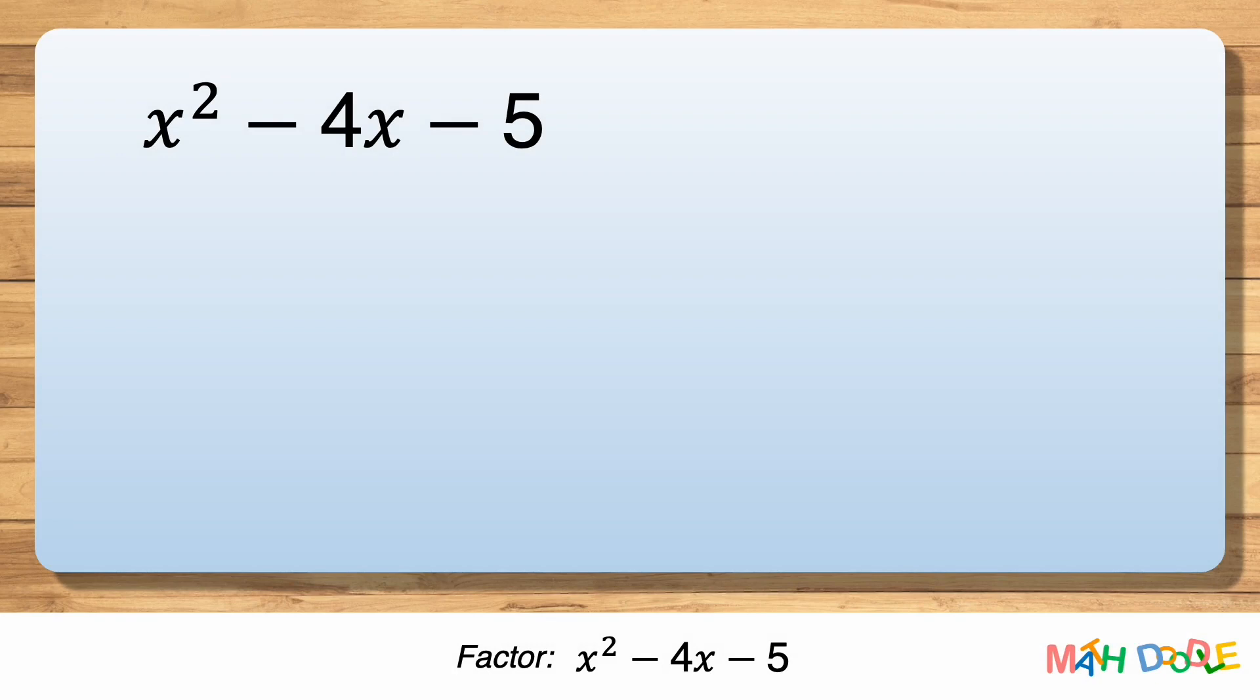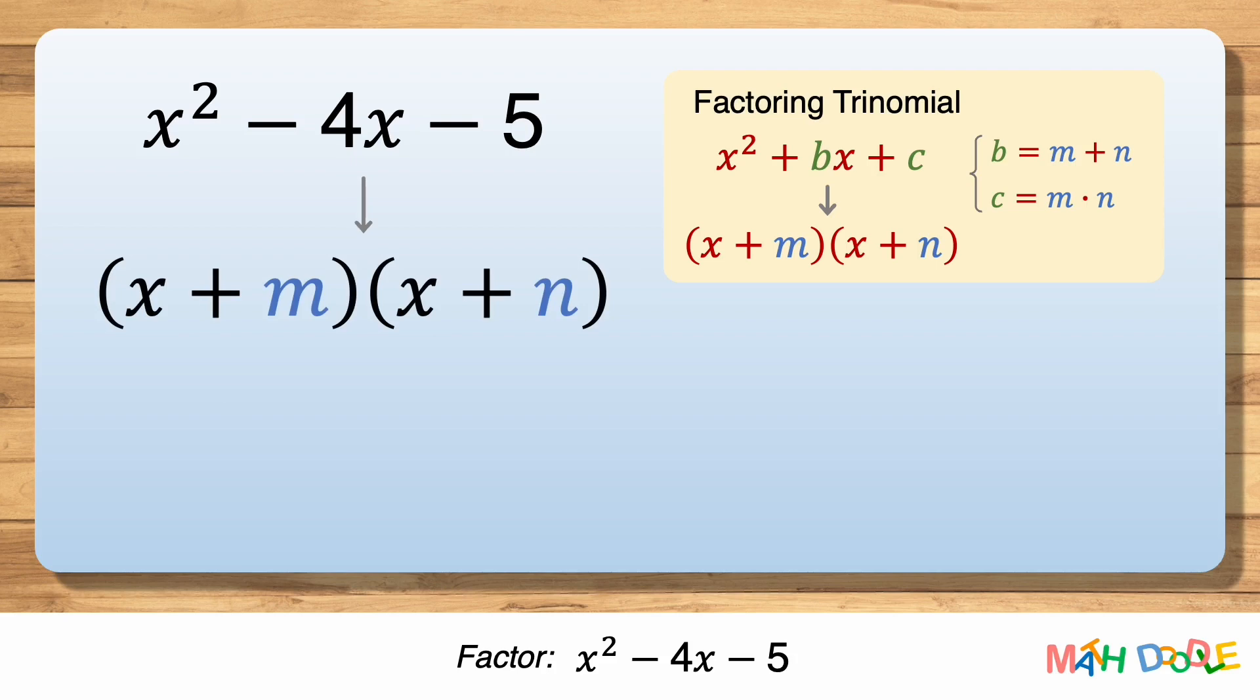To factor this trinomial, let's use this property as a guide. To transform this trinomial into the form of x plus m times x plus n, we must find the values of m and n. We know m plus n is minus 4 and m times n is minus 5.